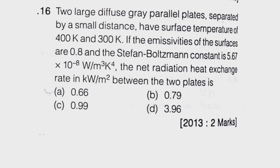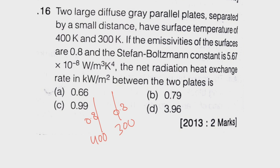Two large diffuse gray parallel plates separated by a small distance have surface temperatures of 400 and 300 Kelvin. Let this be the first surface whose temperature is 400 K and this be the second surface whose temperature is 300 K. The emissivities of the surfaces are 0.8 and 0.8. The Stefan-Boltzmann constant is given. The net radiative heat exchange rate between the two plates is to be found.